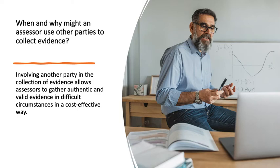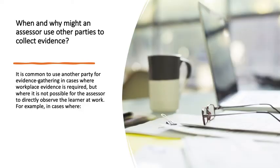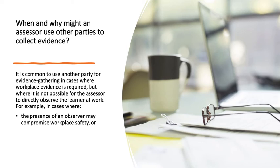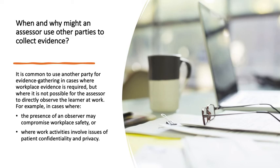When and why might an assessor use other parties to collect evidence? Involving another party in the collection of evidence allows assessors to gather authentic and valid evidence in difficult circumstances in a cost-effective way. It is common to use another party for evidence gathering in cases where workplace evidence is required but where it is not possible for the assessor to directly observe the learner at work. For example, in cases where the presence of an observer may compromise workplace safety, or where work activities involve issues of patient confidentiality and privacy.